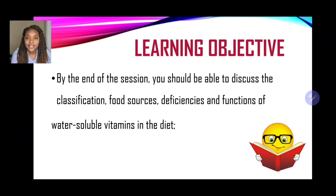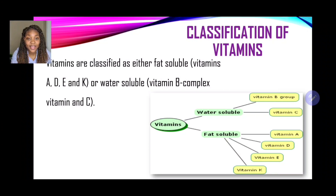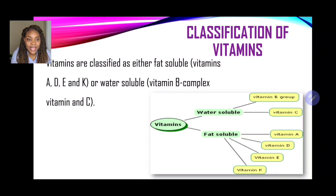Let us kick things off with the classification of vitamins. Vitamins are classified as either fat-soluble, which are vitamins A, D, E, and K — we use ADEK for short — or water-soluble, which is the vitamin B complex, or we may say the vitamin B group, and also vitamin C.